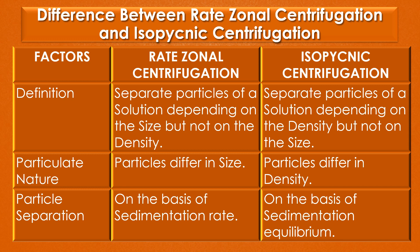First, definition. Rate zonal centrifugation is an analytical technique used to separate particles of a solution depending on the size, but not on the density. Isopycnic centrifugation is an analytical technique used to separate particles of a solution depending on the density, but not on the size.